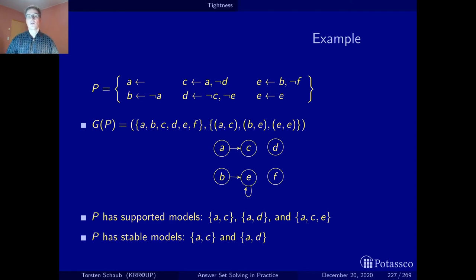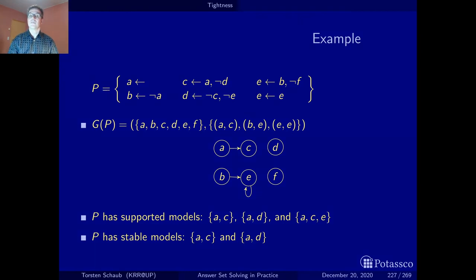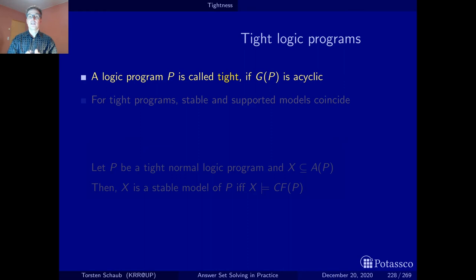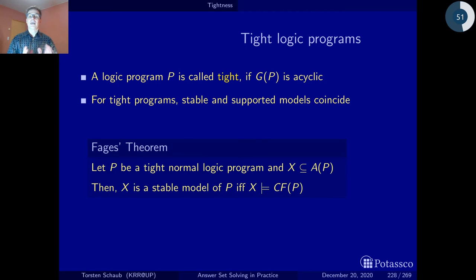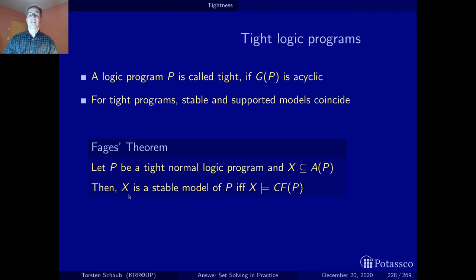Let's look at what happens to programs that are tight — that do not contain such cycles. In fact, whenever the positive atom dependency graph of a logic program has no cycles, the stable and supported models coincide. This was a famous theorem by François Fages, who showed that for tight programs, completion is sufficient and necessary to capture the stable model semantics. So for a tight normal logic program, each model of the completion is a stable model and vice versa. Whenever there are no cycles in the dependency graph, completion alone gives us the stable models.